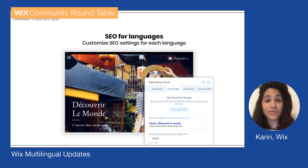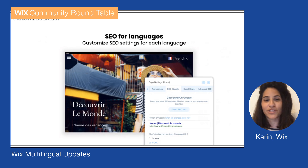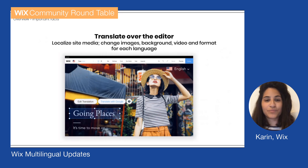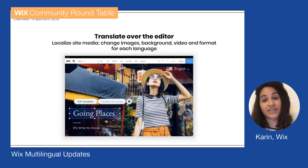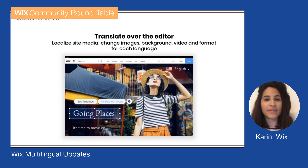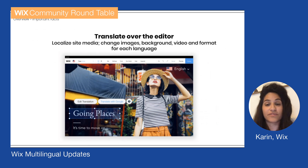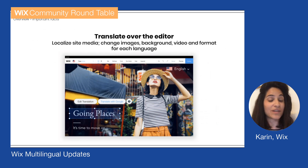For SEO, you can actually customize SEO settings for each language, which is awesome. We also now support subdomains, which is also awesome for SEO. You can translate over the editor, and you can localize site media — change images, background video, and format per language. So for each language you can have not only different content but also different images or different backgrounds. We've also just recently released the Google Translate feature over the editor and we'll show it to you later.